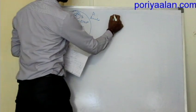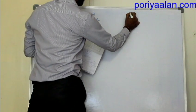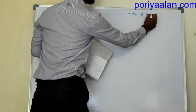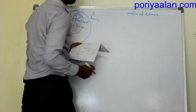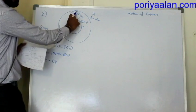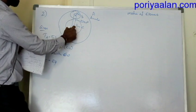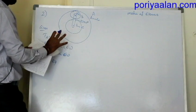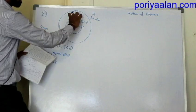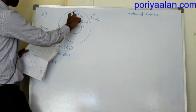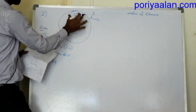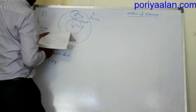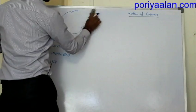We will now set up the tabular method — the table of element motion. We create one table with columns for each element. There are three gears and one arm, giving us four columns in total.